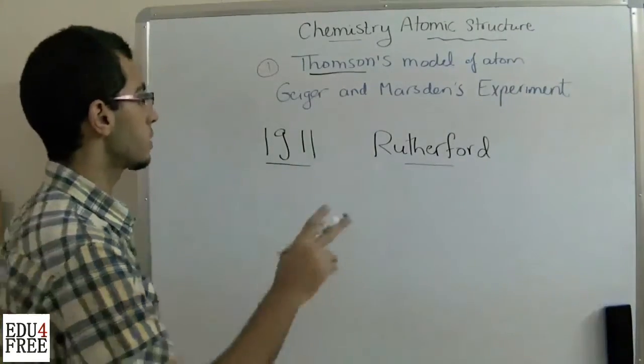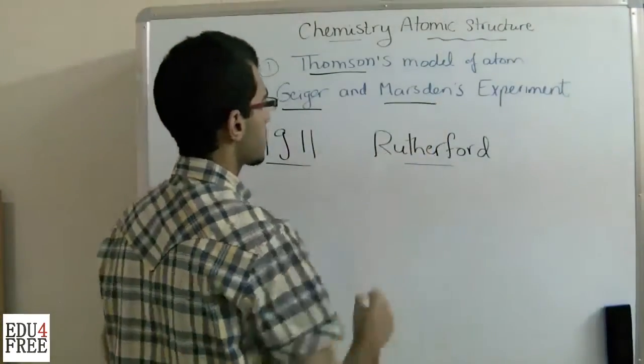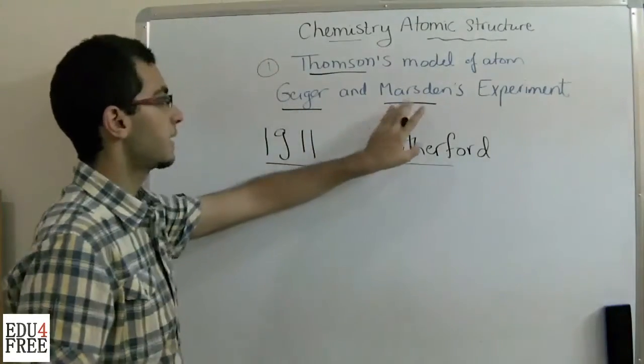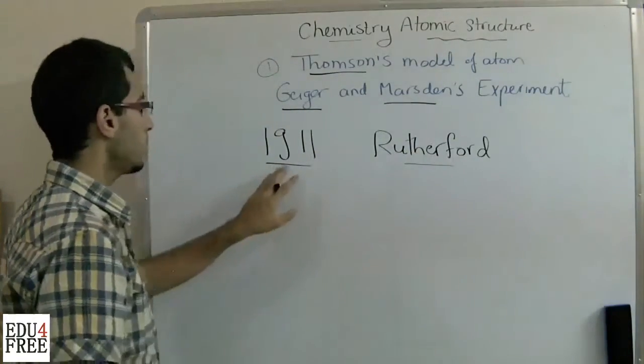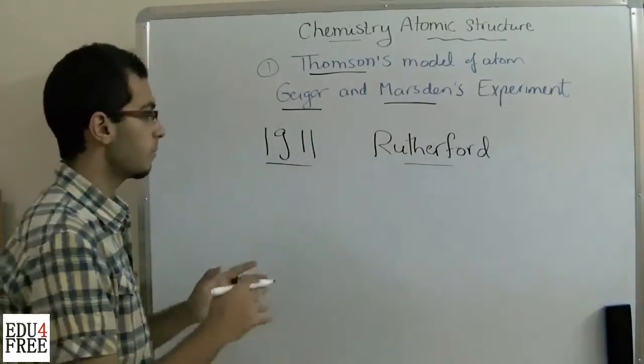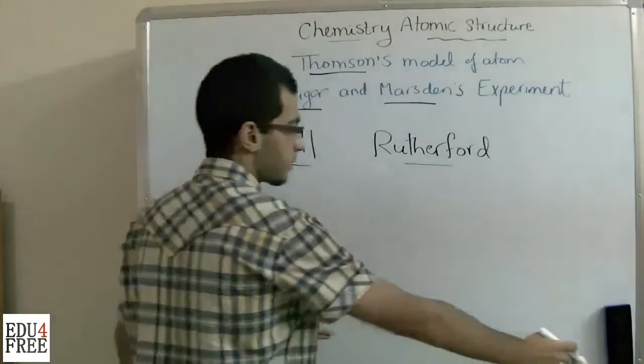Rutherford had two students, Geiger and Marsden. And in the year 1911, they performed a very important laboratory experiment.